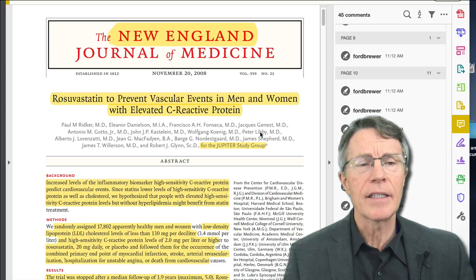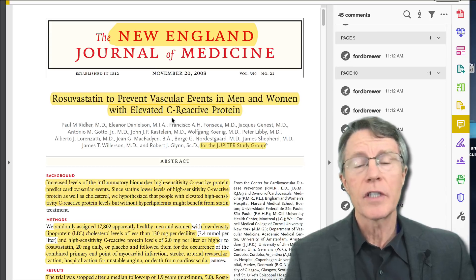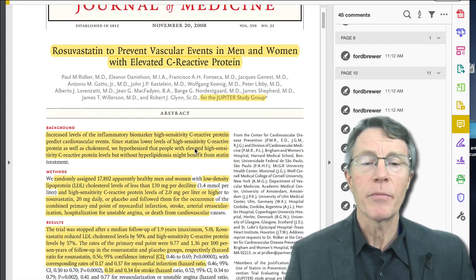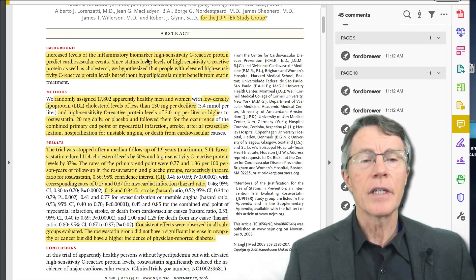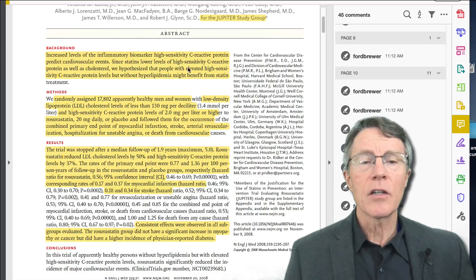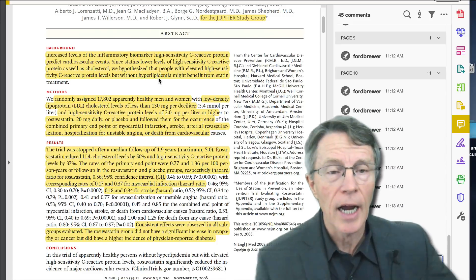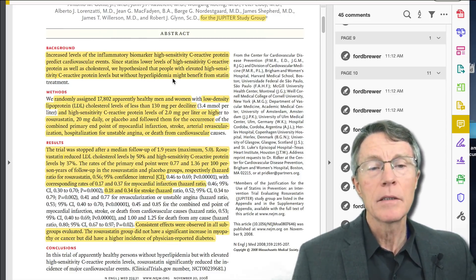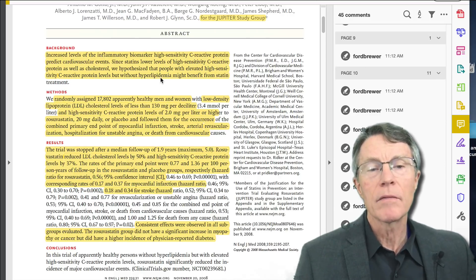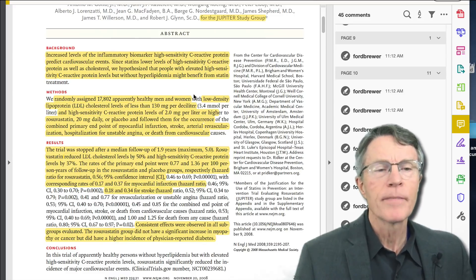So let's go over the study. It's New England Journal 2008. Again, it's been here for 10 years and we're still not getting that message out. The title is rosuvastatin or Crestor to prevent cardiovascular events or vascular events in men and women with elevated C-reactive protein. Increased levels of the inflammatory biomarker C-reactive protein predict cardiovascular events. Statins lower CRP as well as cholesterol. So we hypothesized that people with elevated CRP but low cholesterol without hyperlipidemia might benefit from the statin treatment.